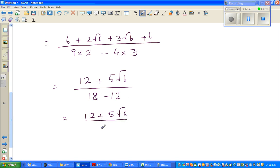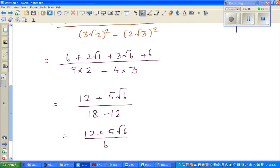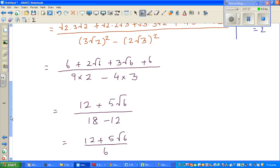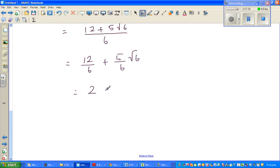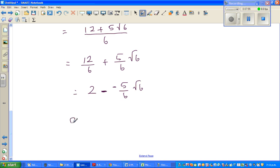So this is 12 plus 5 root 6 over 18 minus 12 is 6. I can factor out. Now I want to write this as a minus b root 6. So I don't want to disturb this root 6. Can I write this as 12 over 6 plus 5 over 6 root 6. They have put a minus to confuse you. This is nothing but 2 minus 5 over 6 root 6, because minus and minus gives you plus. Your a is 2 and your b is minus 5 over 6.